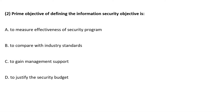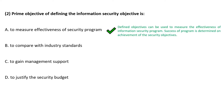The prime objective of defining the information security objective — that is, why you should have an information security objective — correct answer is option A: to measure the effectiveness of security program.